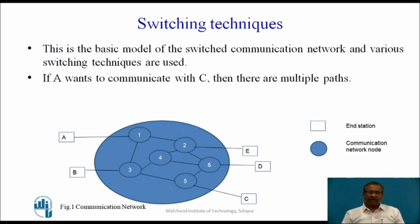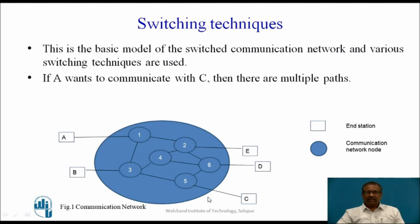Let us have a look at figure 1, which is of a communication network. We have these nodes: Node A, B — total 5 nodes are there — C, D and E. A wants to communicate with remaining 4. Also, B may want to communicate with remaining 4. This way, any terminal wants to communicate with any other terminal, and that is also called an end station.